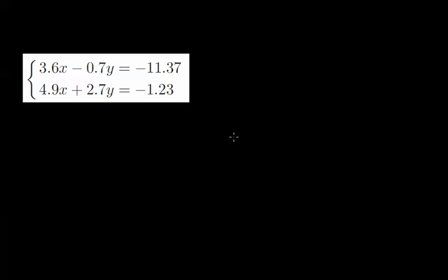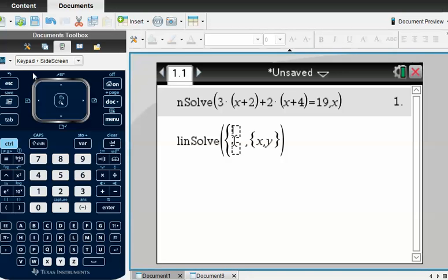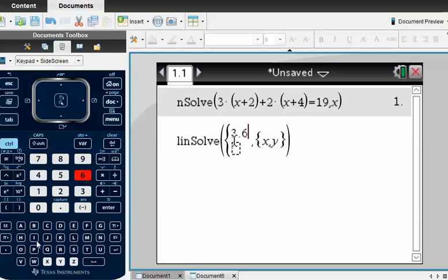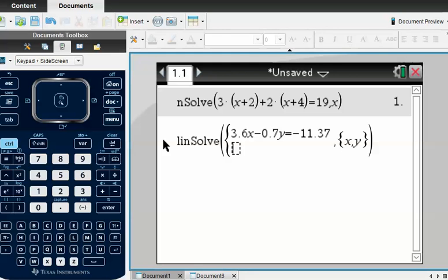What we need to do is just type in the equation, one by one. So it's 3.6x and take away 0.7y equals minus 11.37. And the second one is 4.9x plus 2.7y equals minus 1.23. So everything's typed in exactly the way it is in the question, and then just press enter.